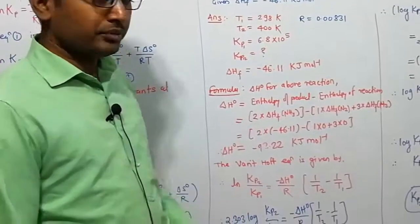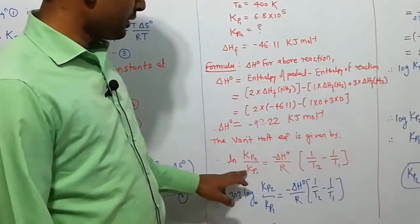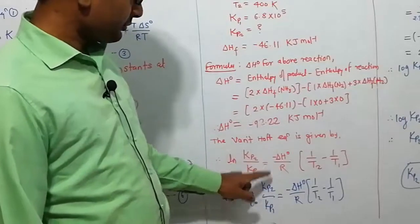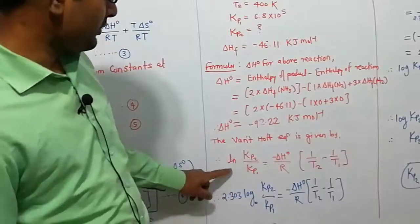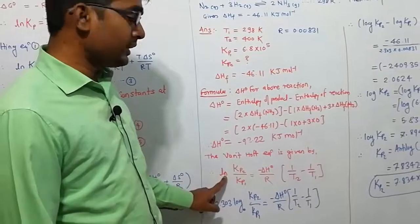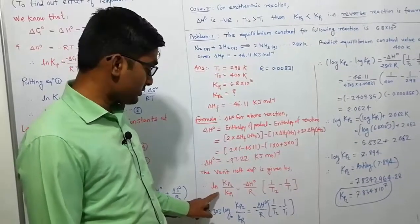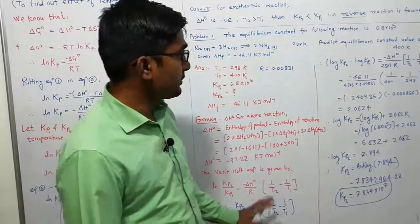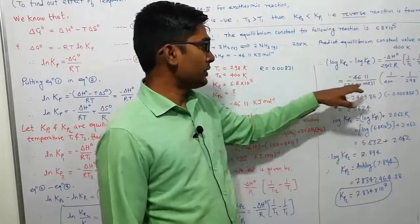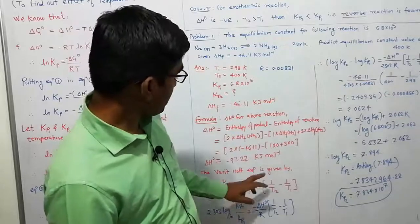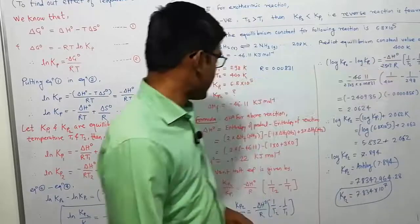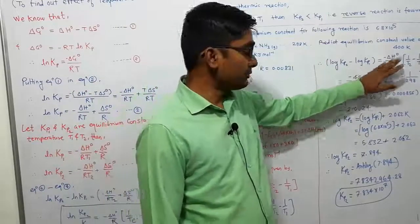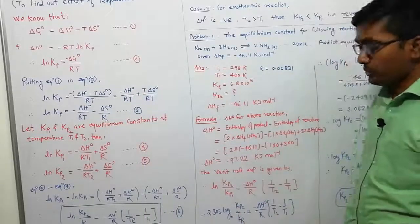Now let us apply the Van't Hoff equation: ln(Kp2/Kp1) = −ΔH⁰/R · (1/T2 − 1/T1). Converting ln to log: 2.303 · log(Kp2/Kp1) = −ΔH⁰/R · (1/T2 − 1/T1). Substituting ΔH⁰ = −92.22 kJ/mol and the temperature values, we can simplify and solve for Kp2.